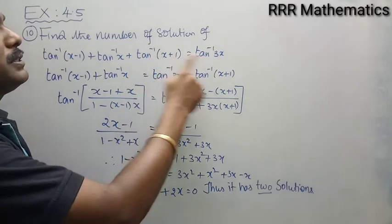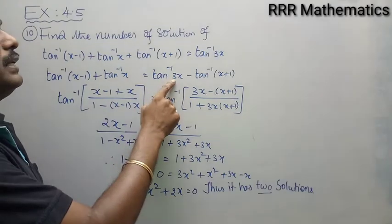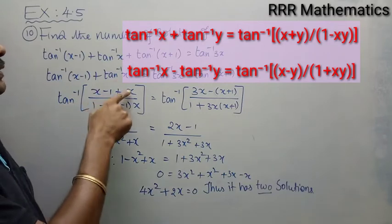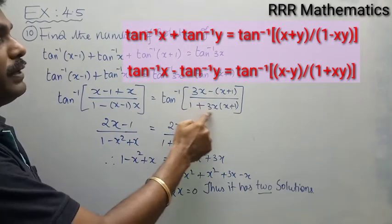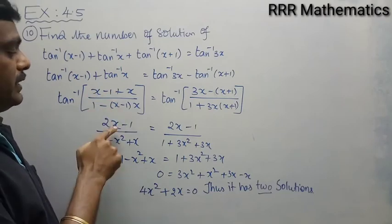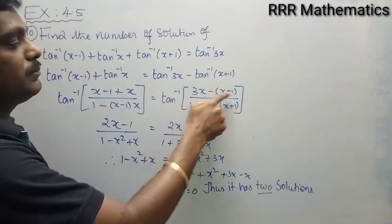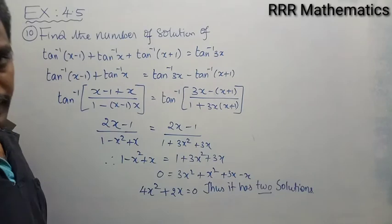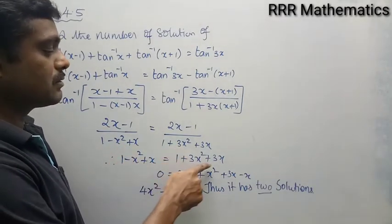To summarize: taking tan inverse of (x plus 1) to the right hand side gives us the form tan inverse x plus tan inverse y on the left, and tan inverse x minus tan inverse y on the right. Applying the respective identities and then canceling the tan inverse on both sides, we get (2x minus 1) over (1 minus x squared plus x) on the left, and (2x minus 1) over (1 plus 3x squared plus 3x) on the right. The numerators cancel, leaving 1 minus x squared plus x equals 1 plus 3x squared plus 3x.